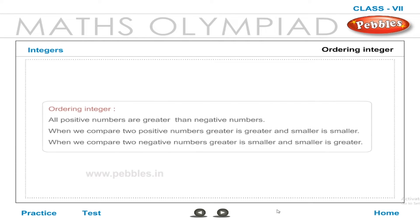Ordering integers: All positive numbers are greater than negative numbers. When comparing two positive numbers, greater is greater and smaller is smaller. When comparing two negative numbers, greater is smaller and smaller is greater.